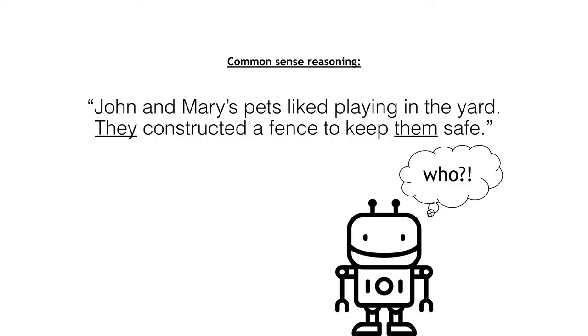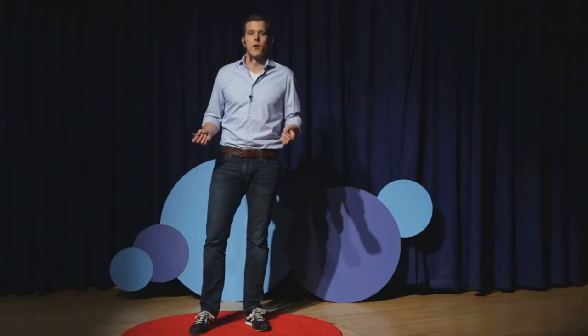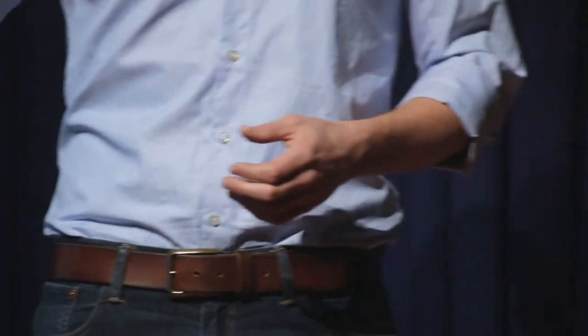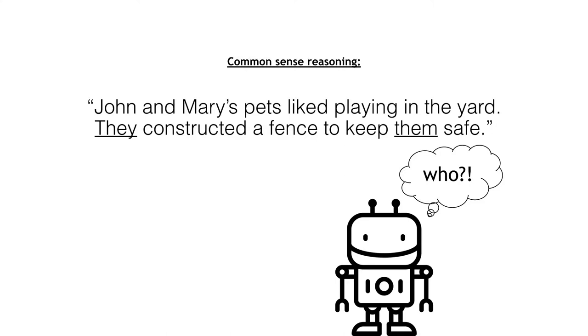Let me give you an example. If we have these two sentences: 'John and Mary's pets like playing in the yard. They constructed a fence to keep them safe.' If I give these two sentences to a human and ask who does 'they' refer to and who does 'them' refer to, we can do this without any trouble. We understand that John and Mary are people who have pets, that they want to keep them safe. So 'they' is John and Mary, and 'them' is their pets.